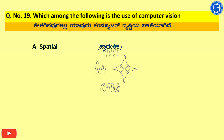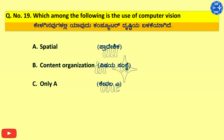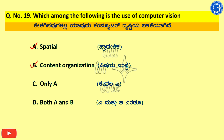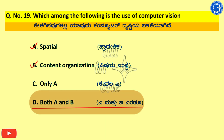Question number 19. Options: A. Spatial, B. Content Organization, C. Only A, D. Both A and B. The answer involves Spatial and Content Organization.